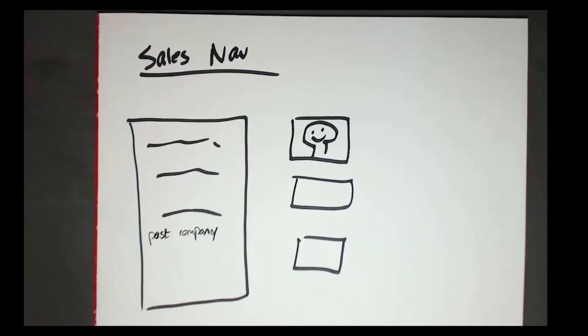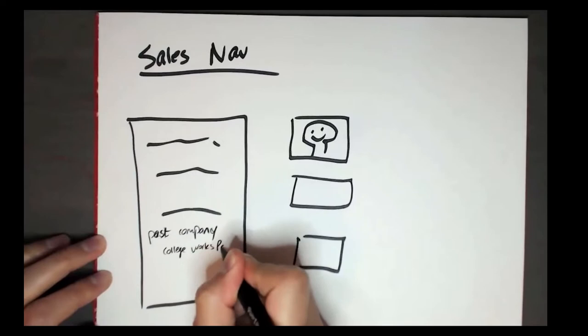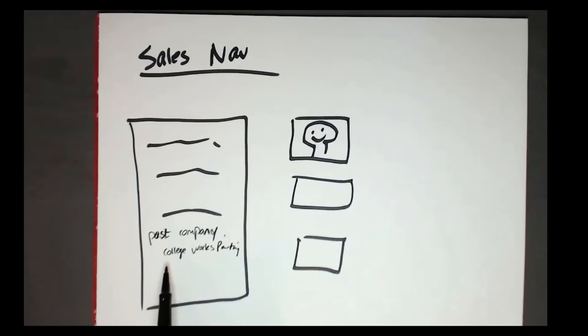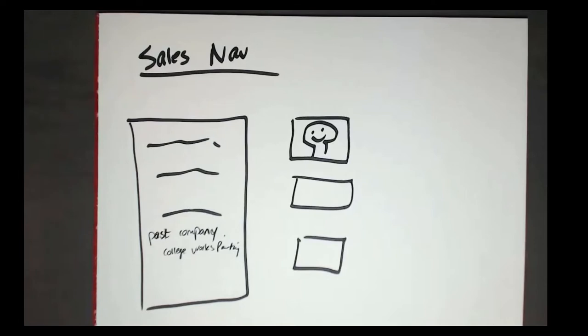Then you can reach out to them at their new company. It's like the warmest cold outreach you'll do. You can say, 'Hey, I saw you used to work at ABC company — I don't know if you were there when we did this work for them, but they had this problem. I'd love to share how we helped them and see if it might be something we could help you with.' That's the Past Company filter. There's another way to use it too — think about companies you've worked for in the past.